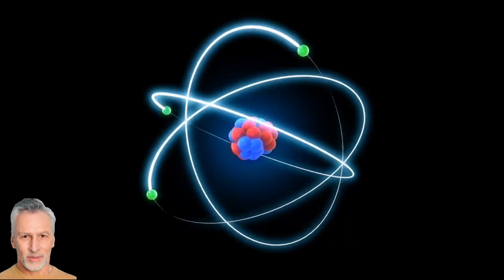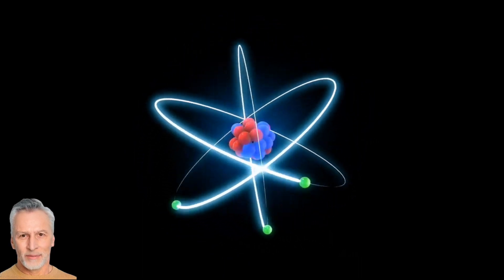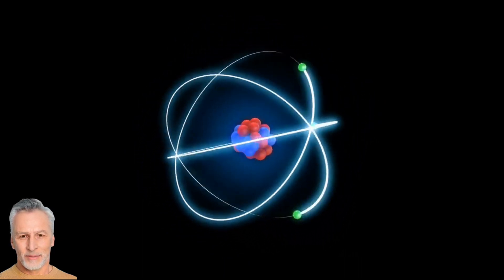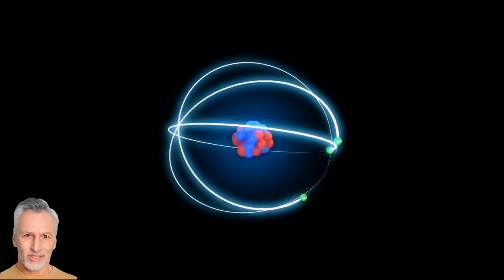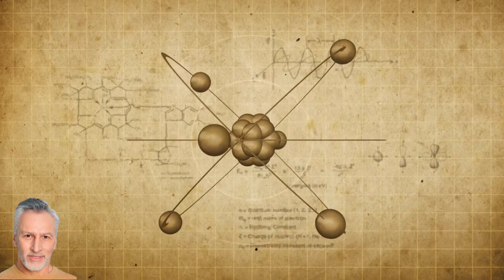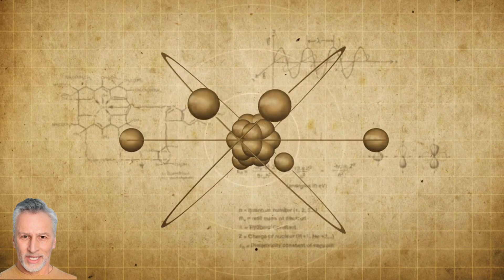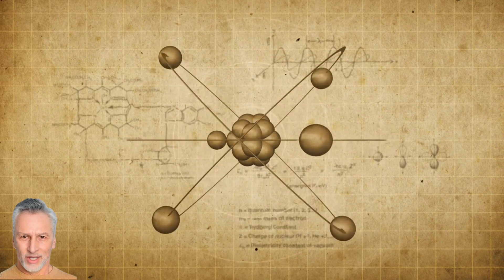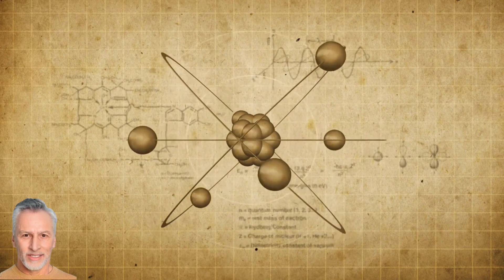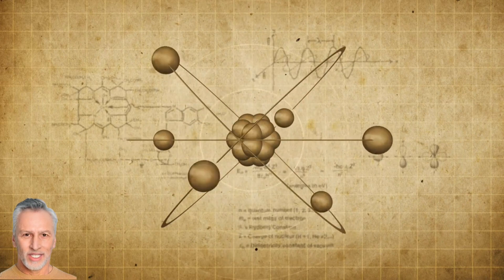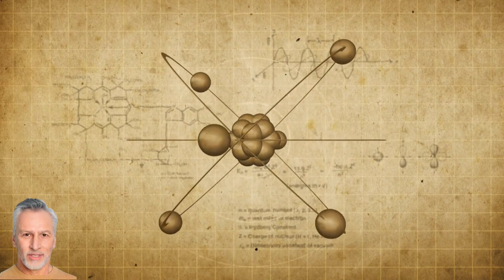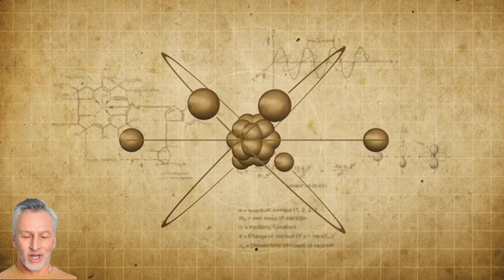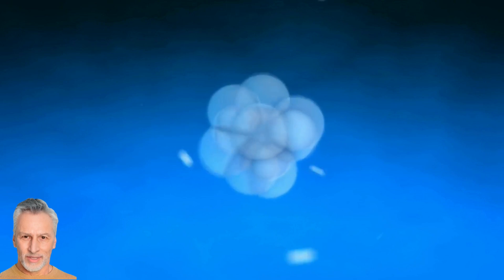Some atoms have unstable nuclei, meaning they have an imbalance of protons and neutrons. This instability causes them to undergo radioactive decay, transforming into more stable atoms over time.